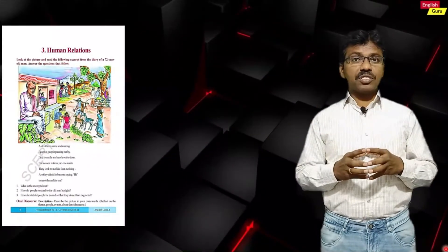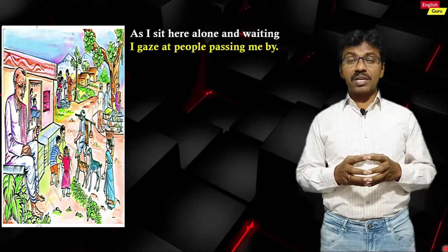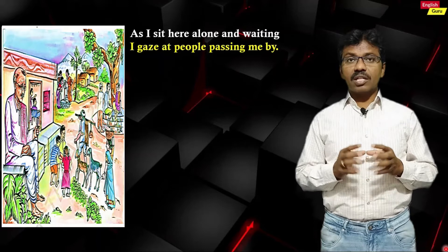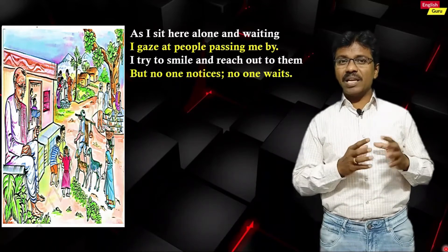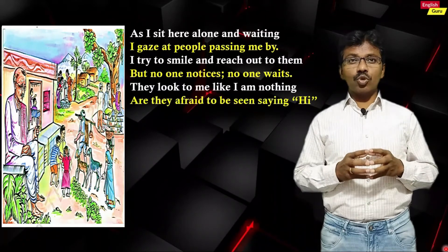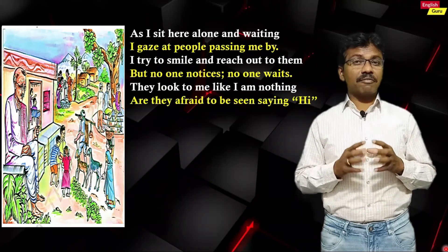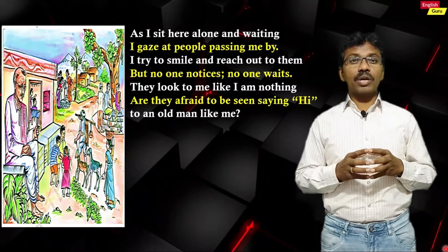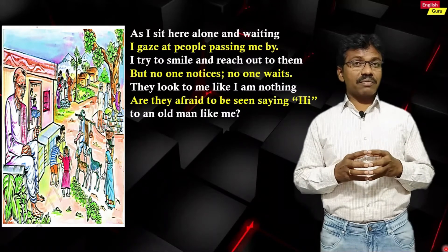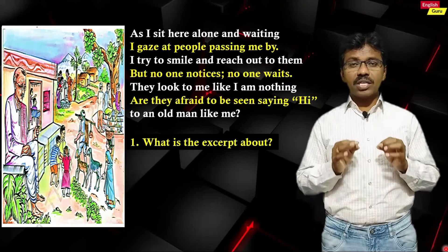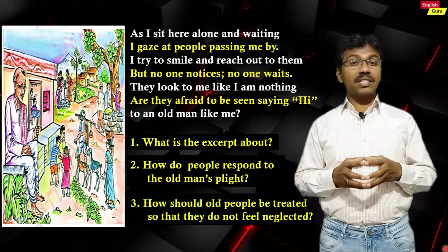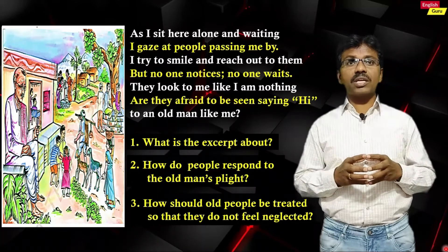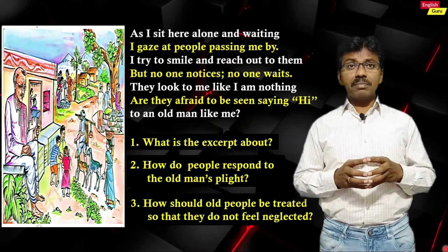This is the phase sheet given in your textbook for Unit 3. You can see a picture, and below the picture there is a poem with three questions. The poem goes: 'As I sit here alone and waiting, I gaze at people passing me by. I try to smile and reach out to them, but no one notices, no one waits. They look to me like I am nothing. Are they afraid to be seen saying hi to an old man like me?' The three questions are: What is the excerpt about? How do people respond to the old man's plight? How should all people be treated so that they do not feel neglected?